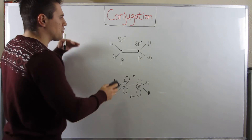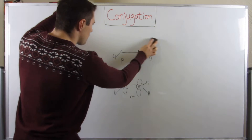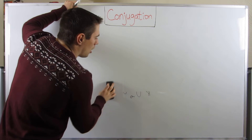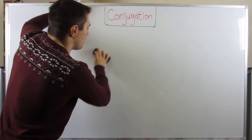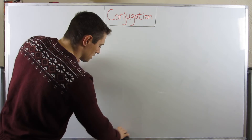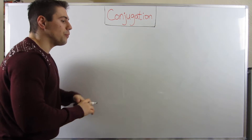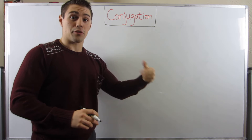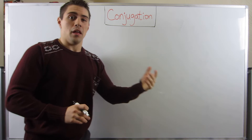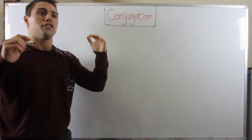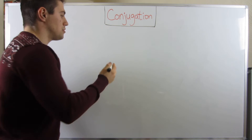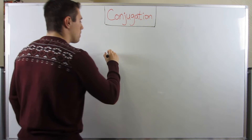So why did I cover that? Well, here's why. Conjugation is basically the concept that if you have a bunch of P orbitals strung together in a row, that creates a stabilizing effect for a molecule.